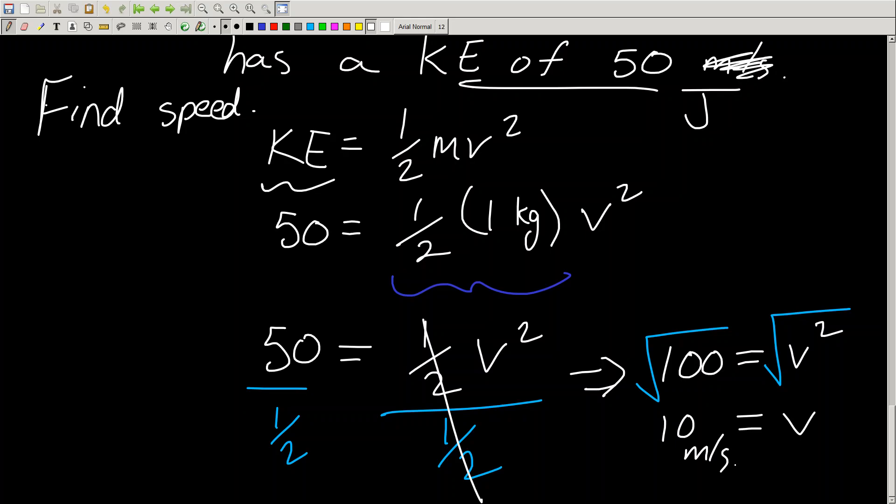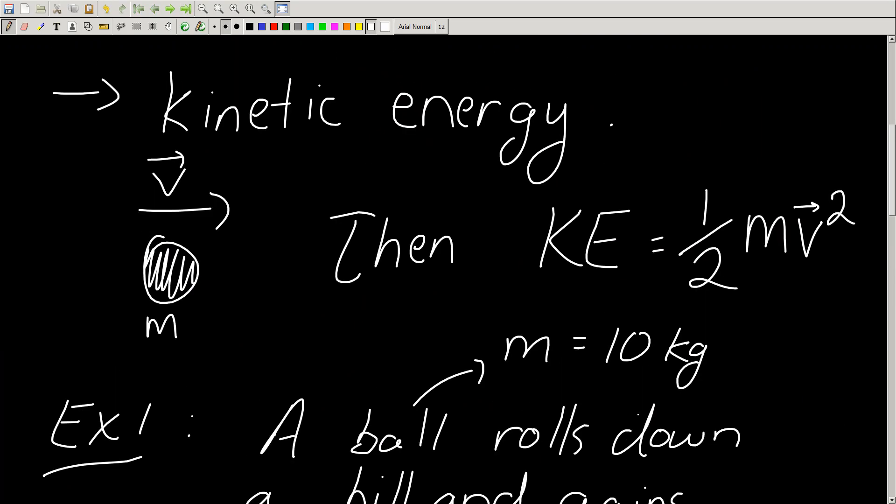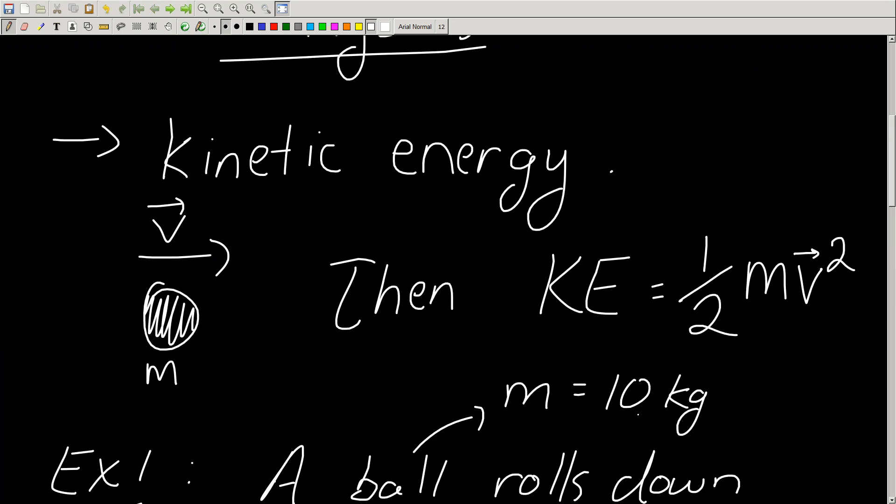So if an object that's 1 kilogram has 50 joules of energy, it is moving at a speed of 10 meters per second. These are simple examples that help us utilize this new formula for kinetic energy, which we'll be using later on to talk about conservation of mechanical energy. So that's the next step. But before that, we'll have to talk about gravitational potential energy.